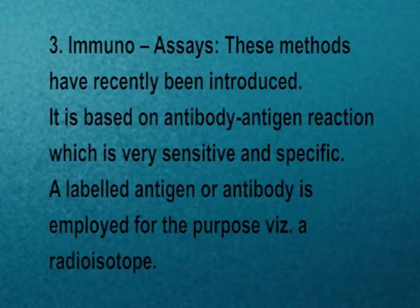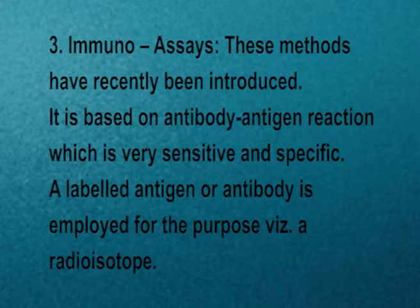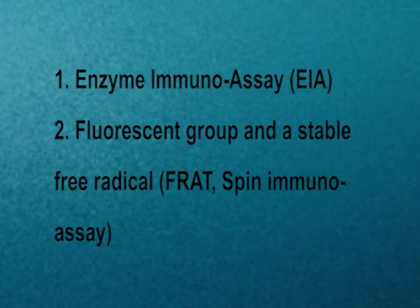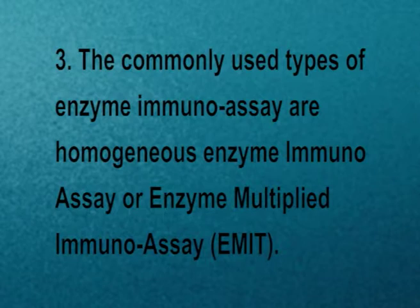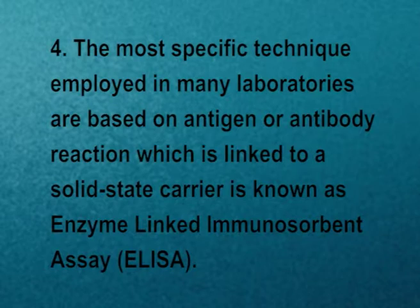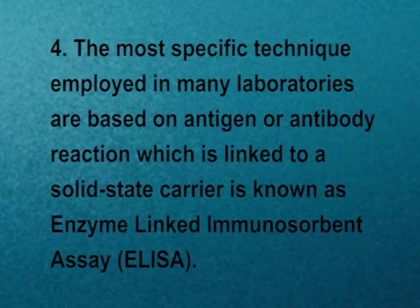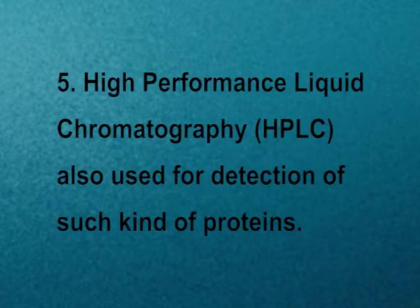Immunoassay Techniques: These methods are based on antibody-antigen reaction, which is very sensitive and specific. A labeled antigen or antibody — such as a radioisotope — is employed. Other methods include Enzyme Immunoassay (EIA), fluorescent-labeled groups, stable free radicals, and FRAT spin immunoassay. The commonly used type is homogeneous enzyme immunoassay, also known as Enzyme Multiplied Immunoassay Technique (EMIT). The most specific technique is ELISA — Enzyme-Linked Immunosorbent Assay — based on antigen-antibody reaction linked to a solid-state carrier. High Performance Liquid Chromatography (HPLC) is also used for detection of such proteins.